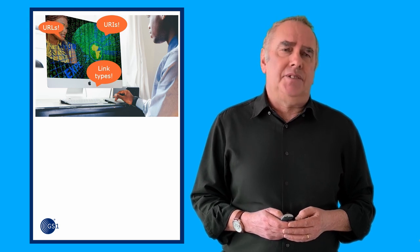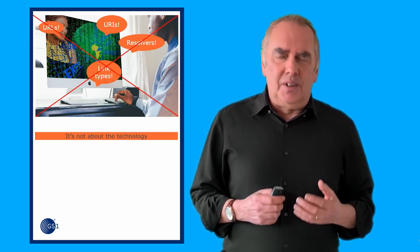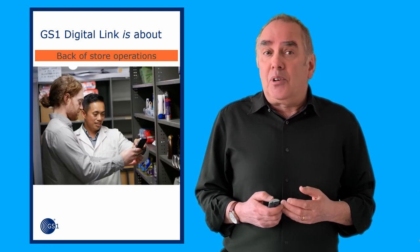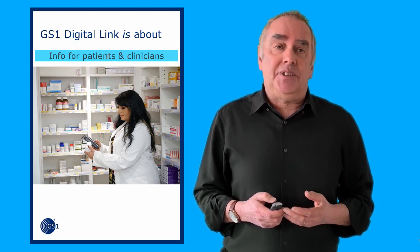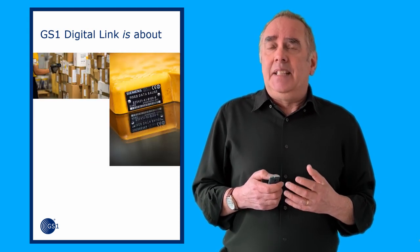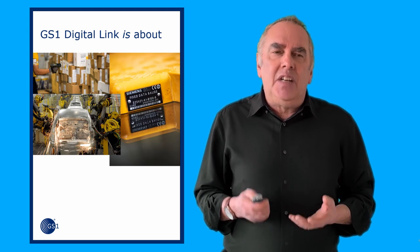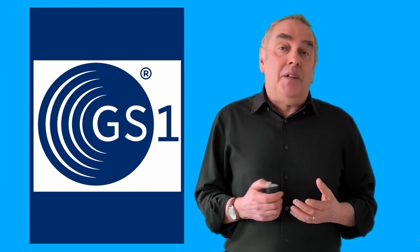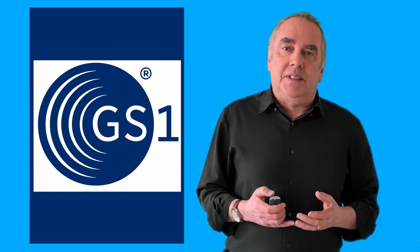Any conversation about Digital Link is likely to include some really weird terms like URIs, link types, URLs, and resolvers. But GS1 Digital Link is not about the technology. GS1 Digital Link is about traceability, product recalls, consumer information, back-of-store operations, providing information to clinicians and patients. It's about online shopping, search engine optimization, customer analytics, warehousing operations, the rail industry, the construction industry, engineering, augmented reality, and a lot about apparel. GS1 Digital Link is about the things that we spend our time helping businesses with all the time.